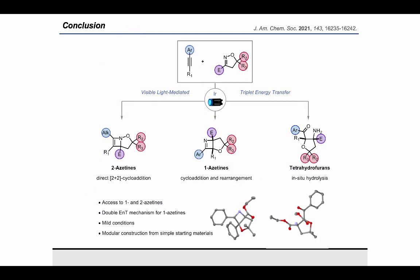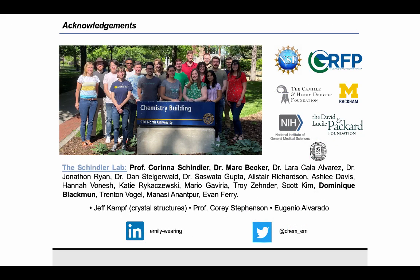That brings us to the end of this episode. In summary, this new visible light-mediated 2+2 reaction enables the synthesis of 2-azetines through direct 2+2 cycloaddition, 1-azetines through cycloaddition and rearrangement, and THFs through in situ hydrolysis. This is the first example of a visible light-mediated method to access azetines through an imine-alkyne type 2+2 cycloaddition. Additionally, this method uses very modular and easily accessible starting materials and provides access to desirable, previously inaccessible products. I want to thank my lab, especially my PI Professor Corinna Schindler and my co-workers Dr. Mark Becker and Dominique Blackman, along with the National Science Foundation for providing me with a pre-doctoral fellowship. I also want to thank Synthesis Workshop for inviting me to share my work, and thank you all for listening.